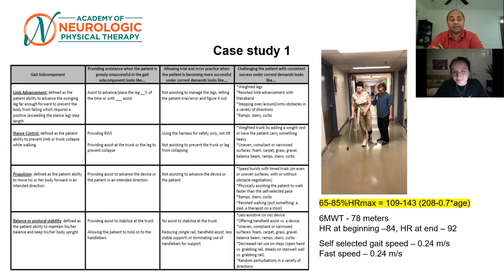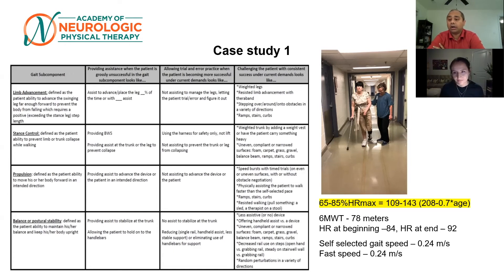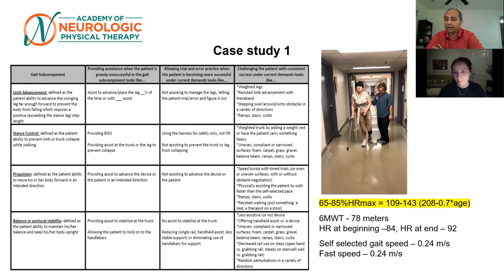Absolutely, very well done. I can totally agree that this person needs to start by improving stance control, and for that we'll probably need some sort of unweighting in order to remain stable — so probably starting with a body weight support system on a treadmill. As described, try to reach the highest possible speeds while keeping the patient steady, then try to increase speeds from there, looking at whether the patient is still able to maintain stance control.